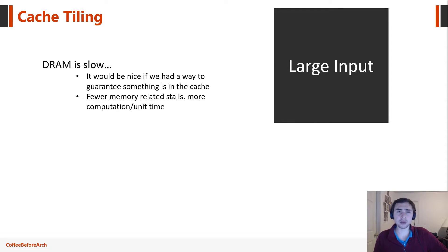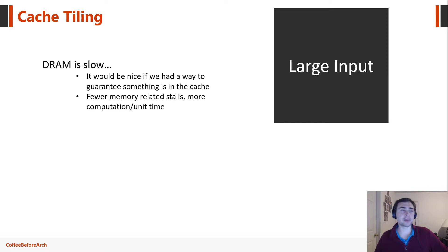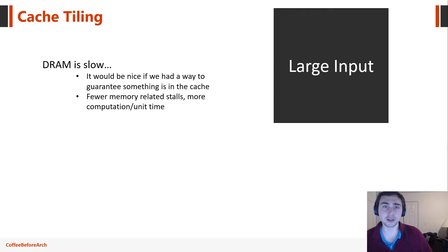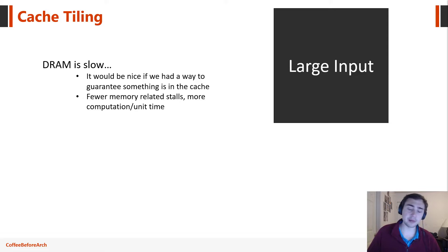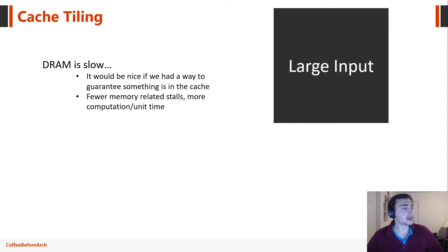However, the problem is there may be conflicts or things will get evicted from the cache and we have to go all the way back to main memory. If you're familiar with computer architecture, you know that main memory is pretty slow and we don't want to be going out there if we can avoid it. So what we'd like is a way to have fewer memory-related stalls so more of our time is spent towards computation.